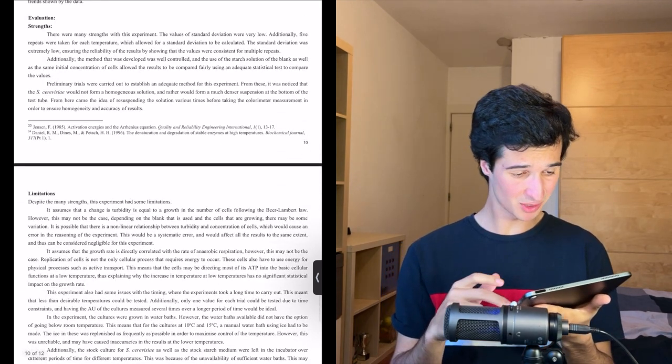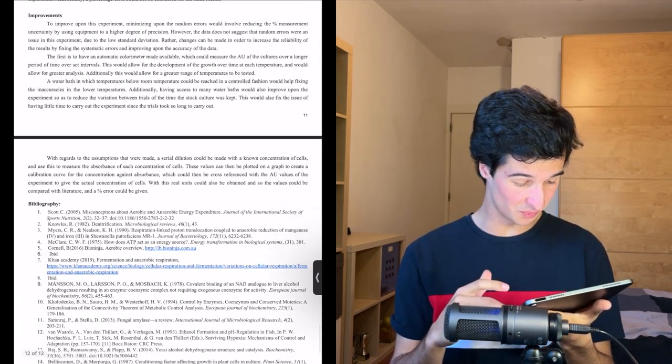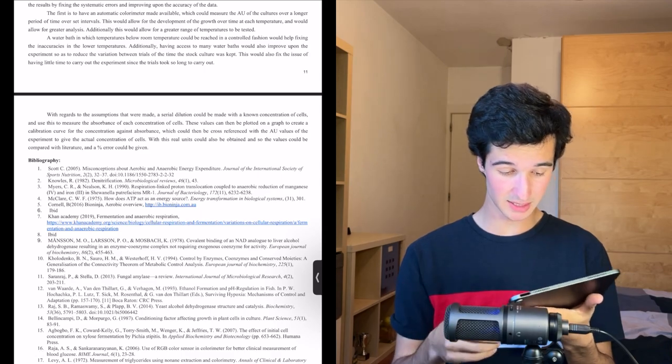And then the evaluation. Strengths, limitations, improvements. Nice and easy. Writing this sort of evaluation for biology, chemistry, whatever IAs you're writing for, it tends to be quite rinse and repeat. You just sort of do it over and over again. Strengths, limitations, improvements, etc. I hope me reading through my IA was interesting at all for you. If it did, then give this video a like, and I'll see you in the next one.